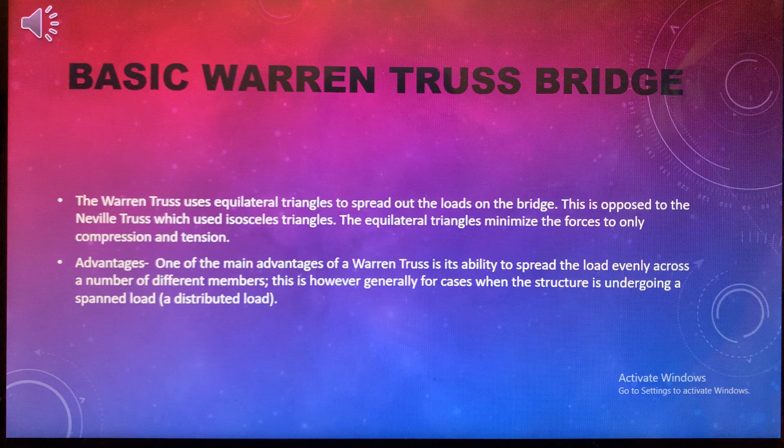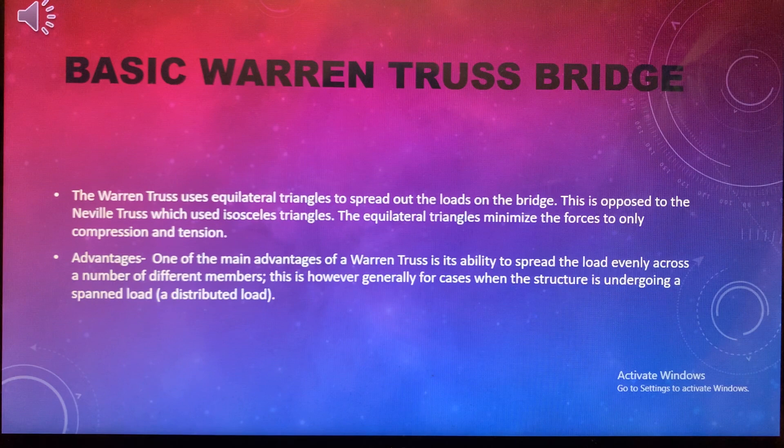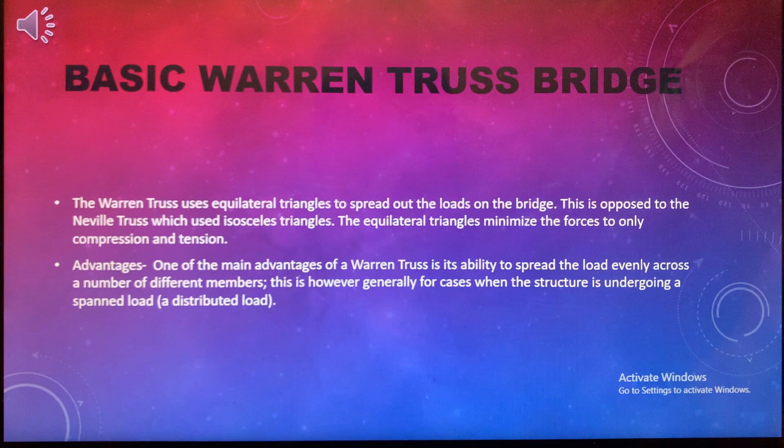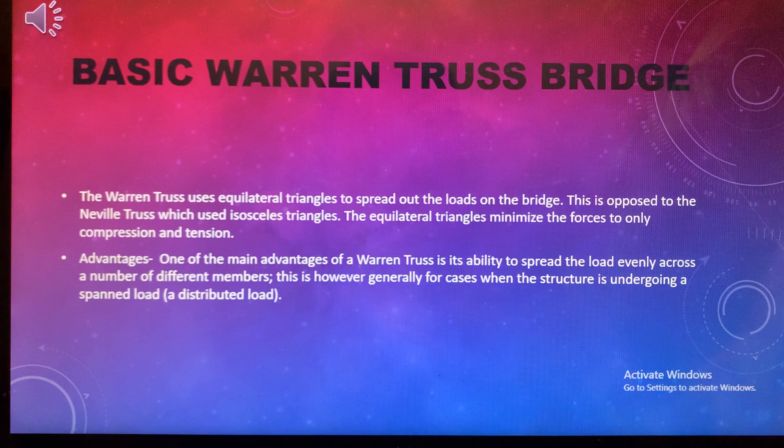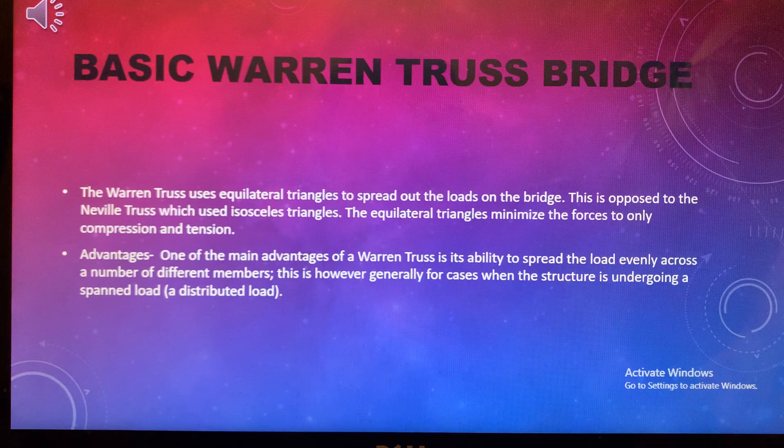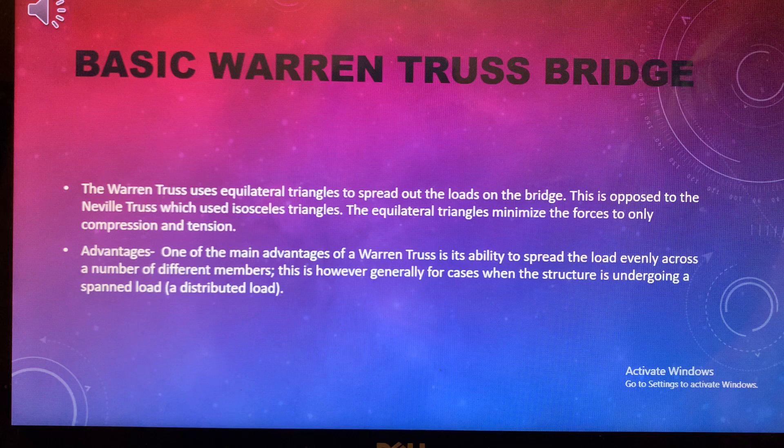The first bridge we're going over is the basic Warren truss bridge. The Warren truss uses an equilateral triangle to spread out the load on the bridge, as opposed to the Neville truss, which uses isosceles triangles. The equilateral triangle minimizes the force to only compression and tension. One of the main advantages of a Warren truss is its ability to spread the load evenly across a number of different members — members being the lines you see on diagrams or the actual beams of the bridge. This is generally for cases when the structure is undergoing a span load or a distributed load.